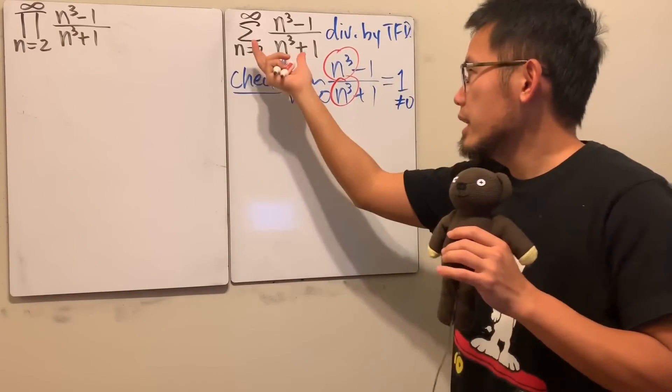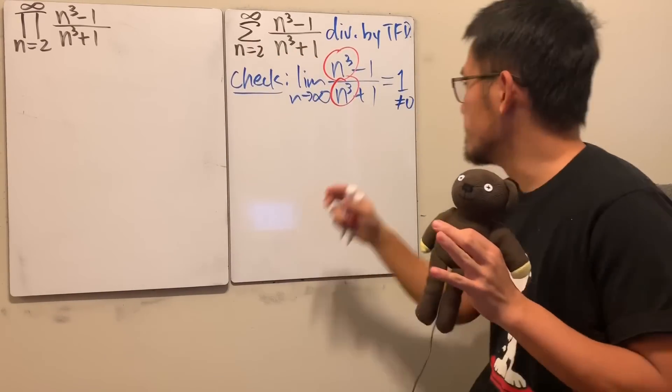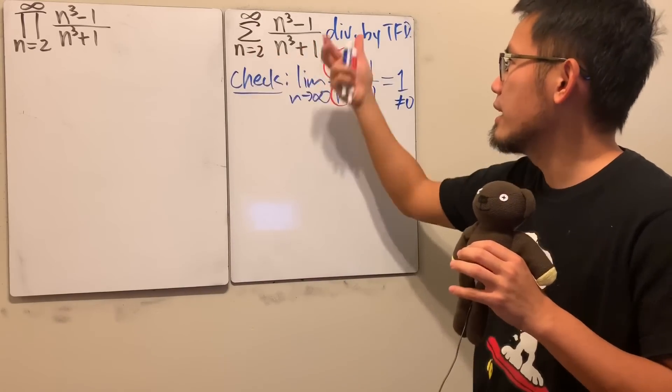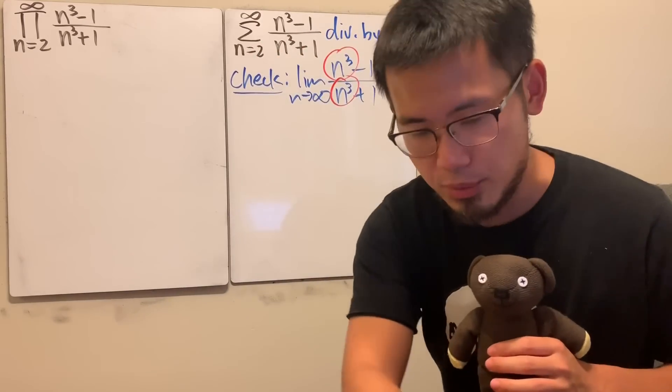So you see, in the end, we are pretty much going to be adding a bunch of 1s. That's why when you're adding a bunch of 1s, you end up with infinity, and that's why it is a divergent series.